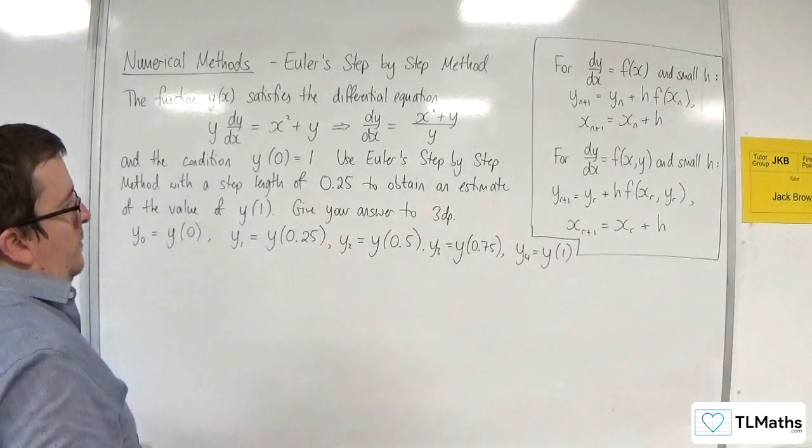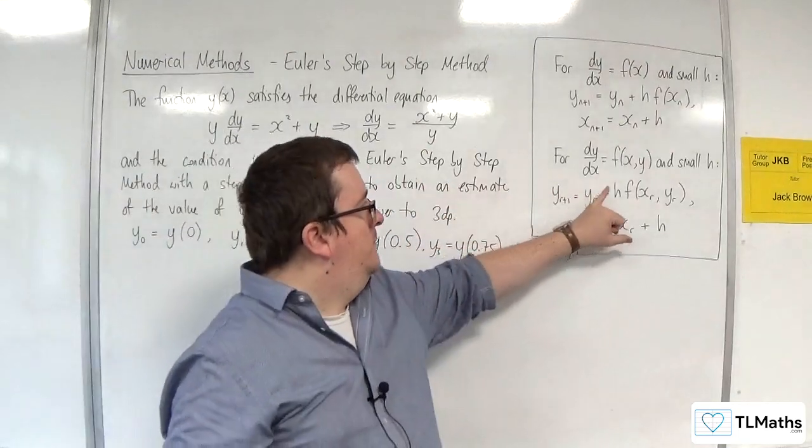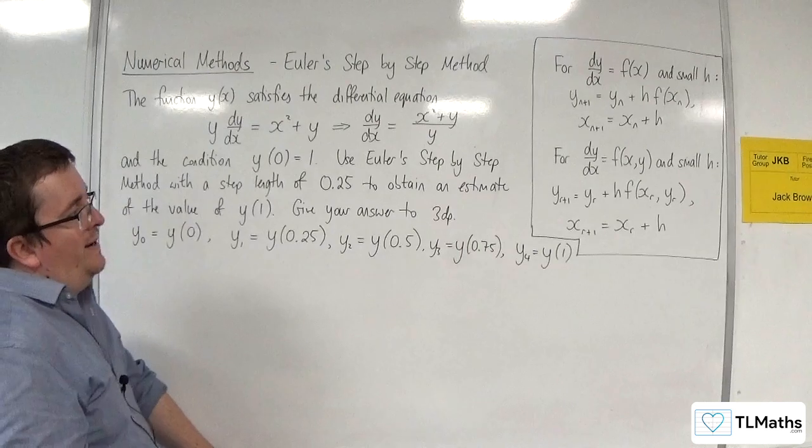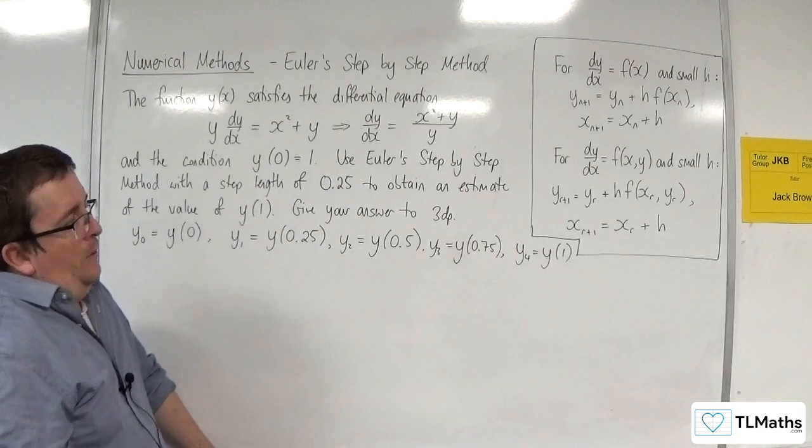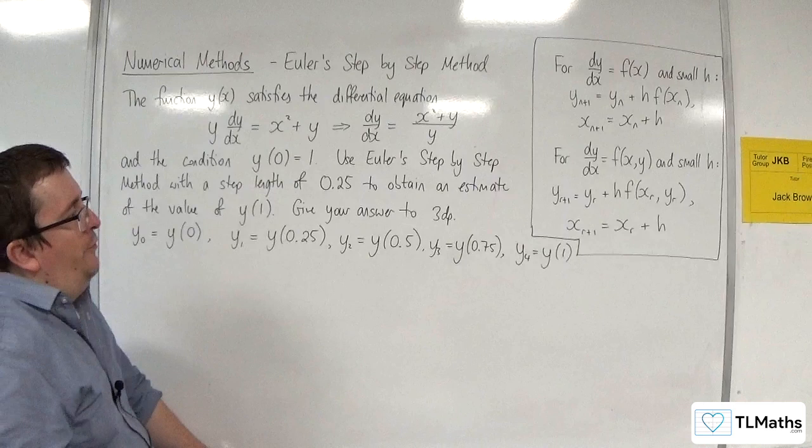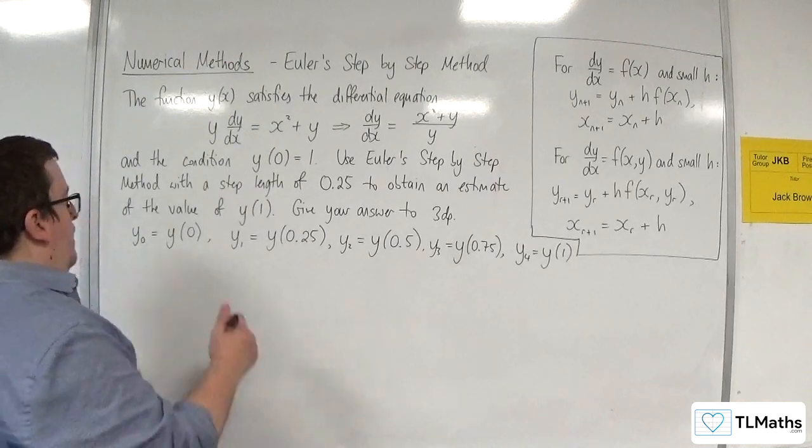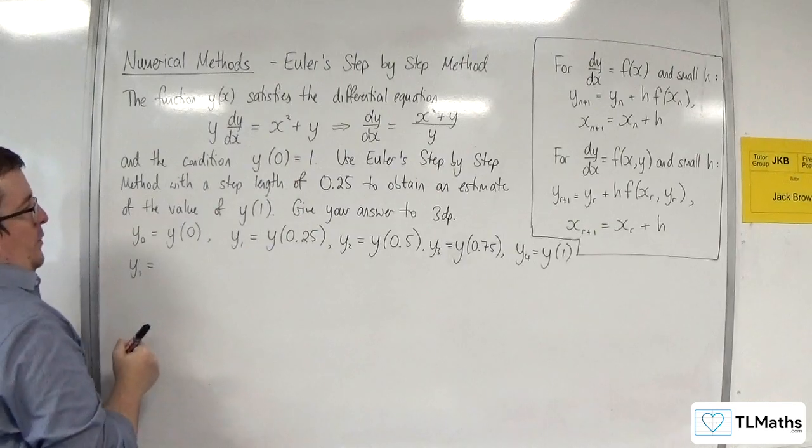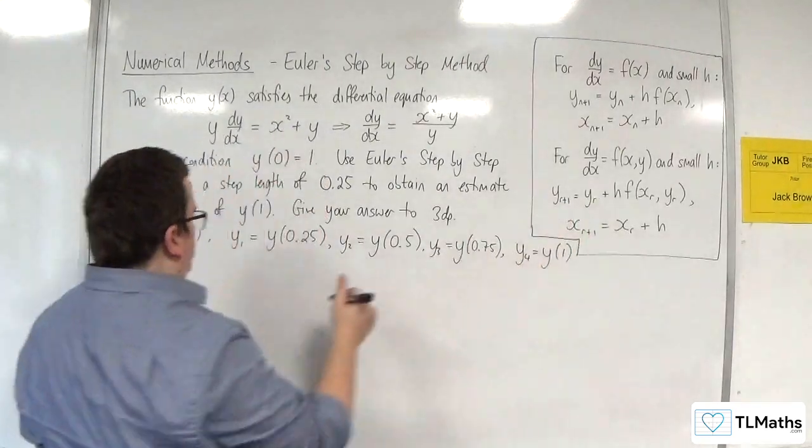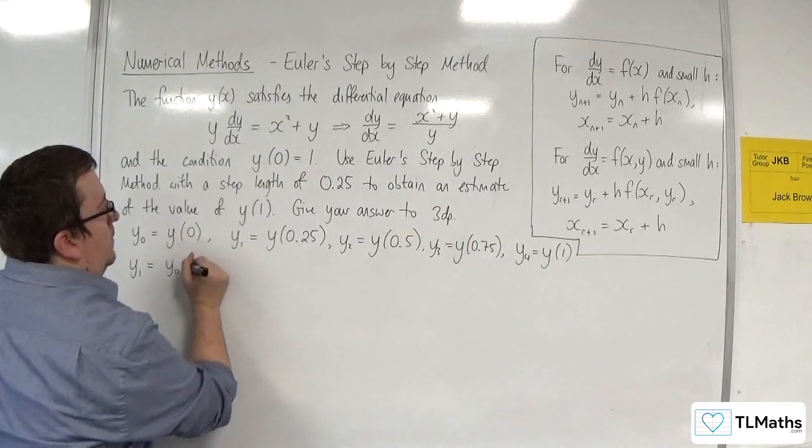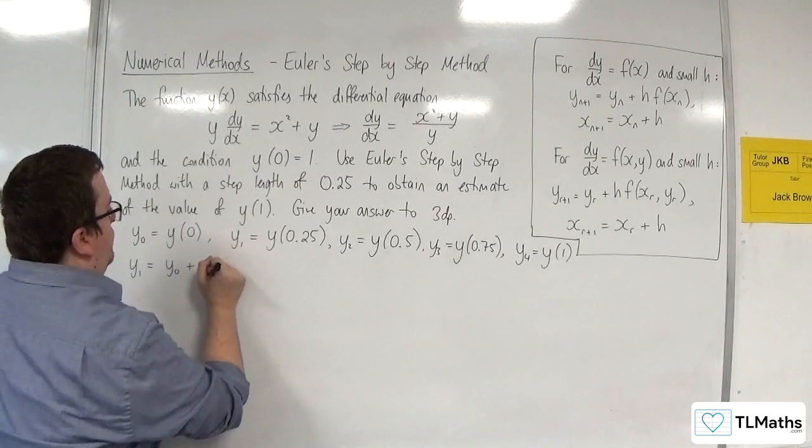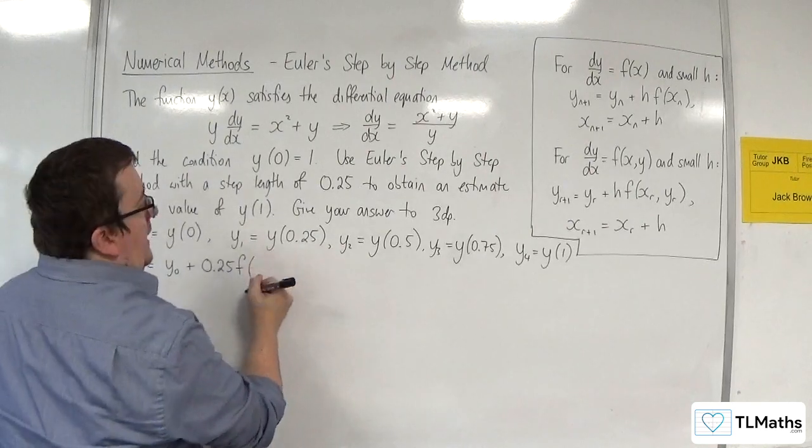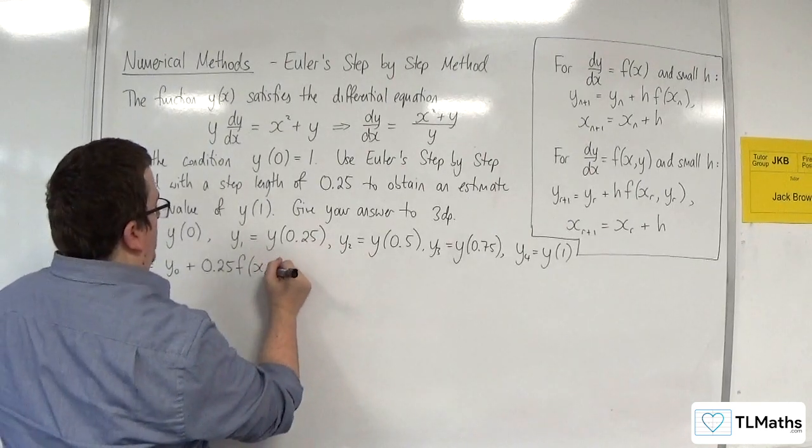I'm using this formula here. So we've got some function of x and y to the right-hand side of my dy by dx. So let's dive straight in. So y₁ is going to be equal to y₀ plus h, so 0.25, times f of x₀, y₀.